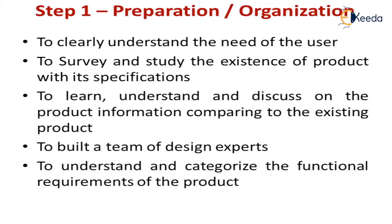Then a team of design experts is built, and they are going to finalize the final design. Then we need to understand and categorize the functional requirements of the product. Function is nothing but the utility, divided into primary, secondary, and tertiary. So for a product, I should define and categorize these functional requirements — which is primary, which is secondary, which is tertiary — and how I am going to concentrate on these functions. This is nothing but a general preparation of the value engineering process.